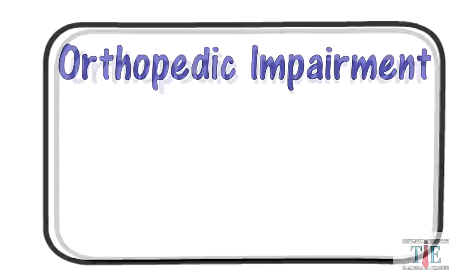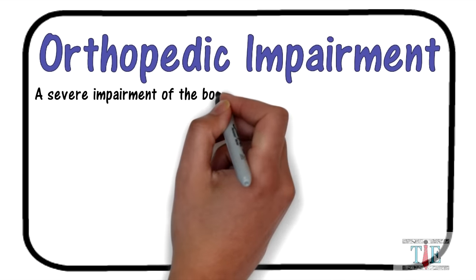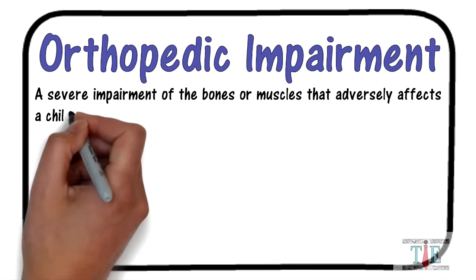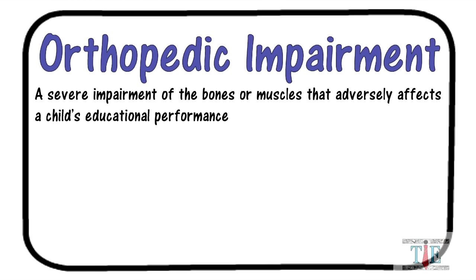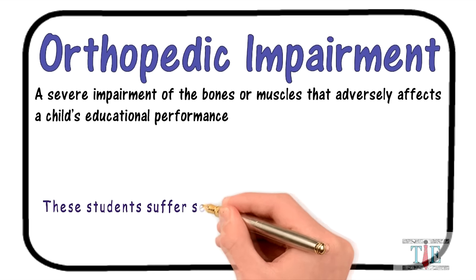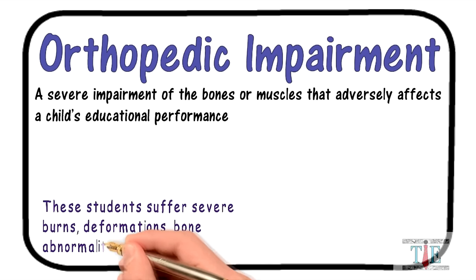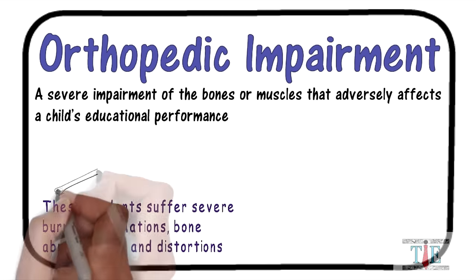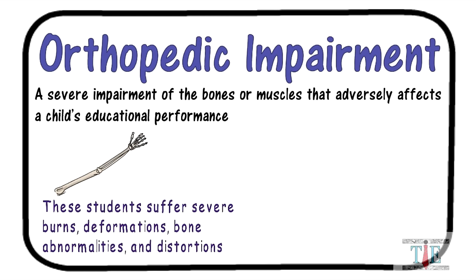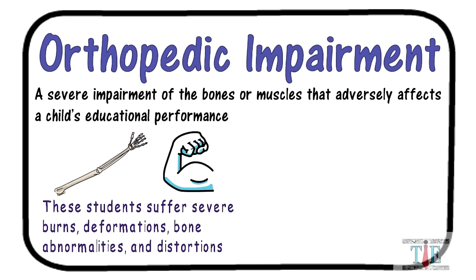Orthopedic impairments. This disability is defined as a severe impairment of the bones or muscles that adversely affects a child's educational performance. These students suffer severe burns, deformations, bone abnormalities, and distortions. The disability can be caused by bone tuberculosis. Some students even have muscle abnormalities and distortions.